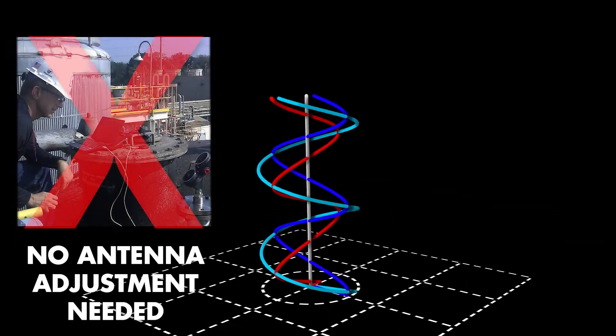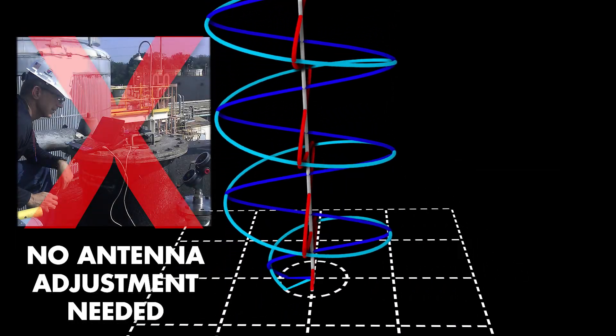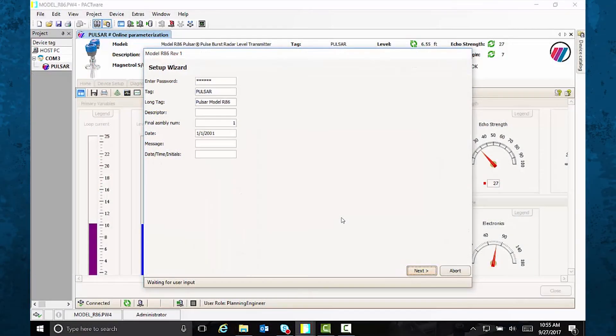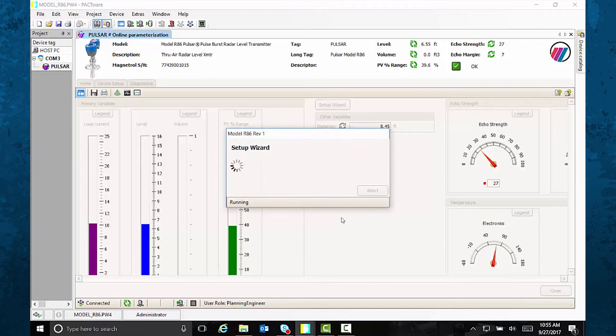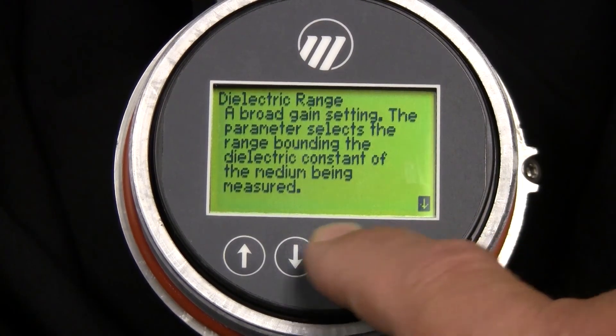And the Model R86 is extremely easy to use. It has circular polarization, which simplifies installation. You never have to make adjustments because any direction you orient the transmitter offers the proper alignment. The Pulsar Model R86 even walks you through configuration—the setup wizard explains the process step-by-step so your transmitter will be on the job quickly.